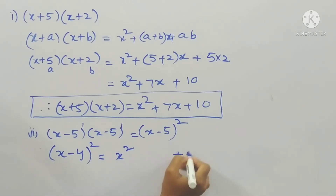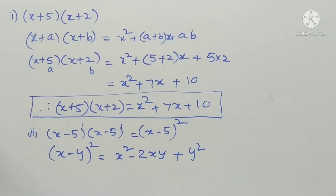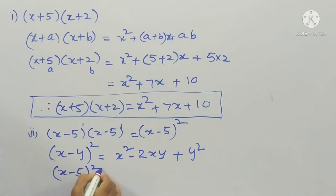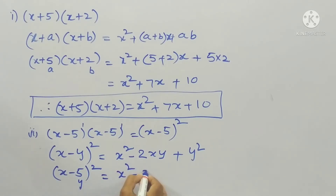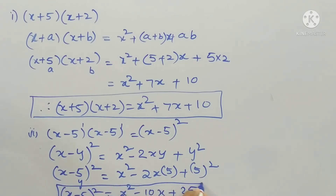The formula for (x − y)² gives x² minus 2xy plus y². Here y = 5, so we get x² − 2·x·5 + 5², which equals x² − 10x + 25. Therefore (x − 5)² = x² − 10x + 25.